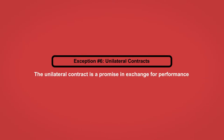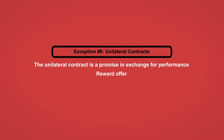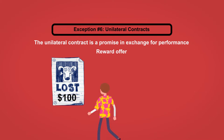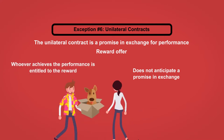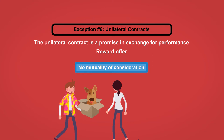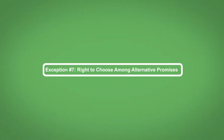Exception number six: unilateral contracts. A unilateral contract is a promise in exchange for performance. The most common example is a reward offer — a promise to give a reward of $100 to anybody who finds a lost pet does not anticipate a promise in exchange. Instead, whoever achieves the performance is entitled to the reward. There is no mutuality of consideration because there is only one promise and only one binding party. Nevertheless, unilateral contracts are exceptions to the rule of mutuality of consideration and are enforceable.